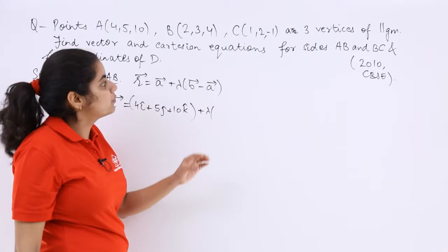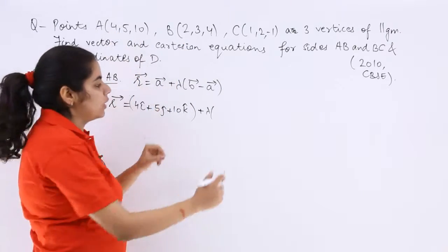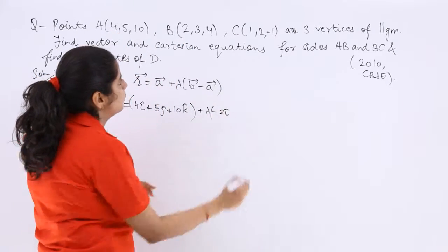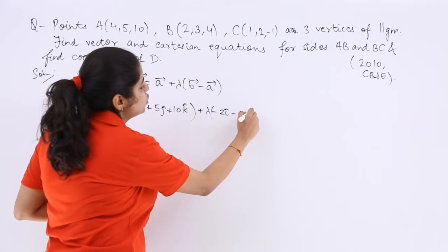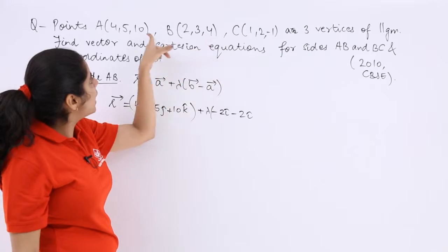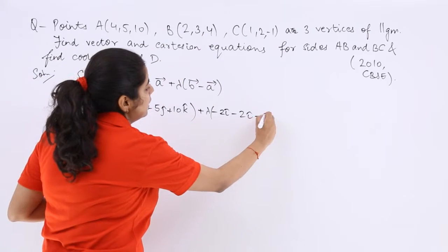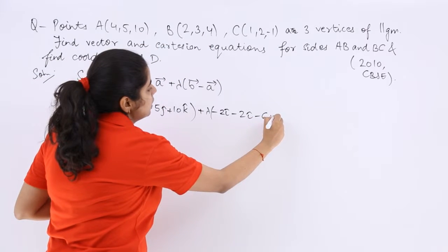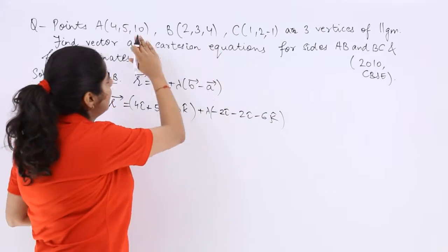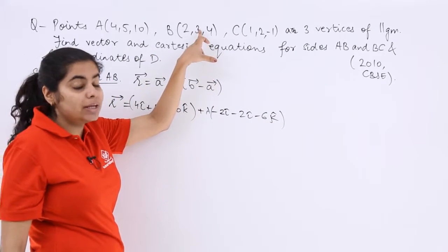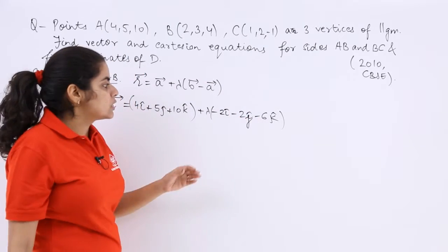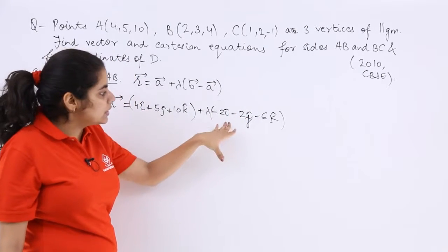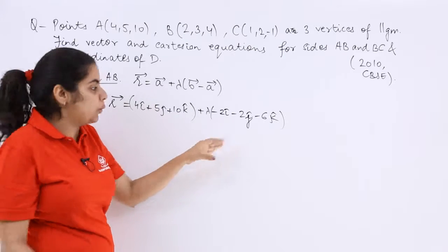Plus lambda times B vector minus A vector. You have to subtract. So 2i minus 4i is minus 2i, 3j minus 5j is again minus 2j, 4k minus 10k is minus 6k. Here it should be j, here it should be j.